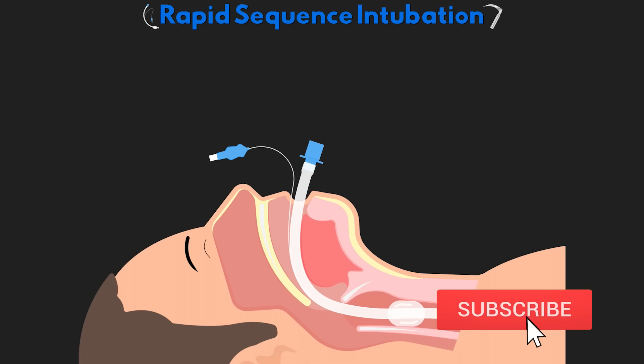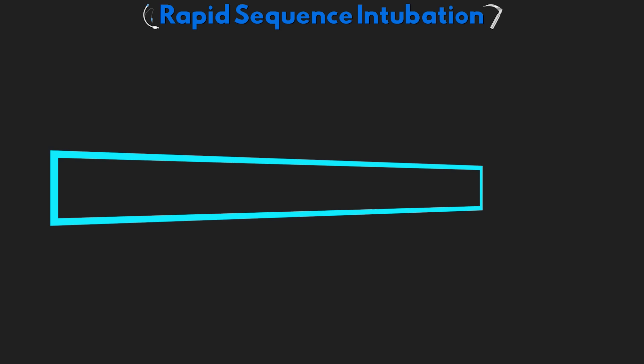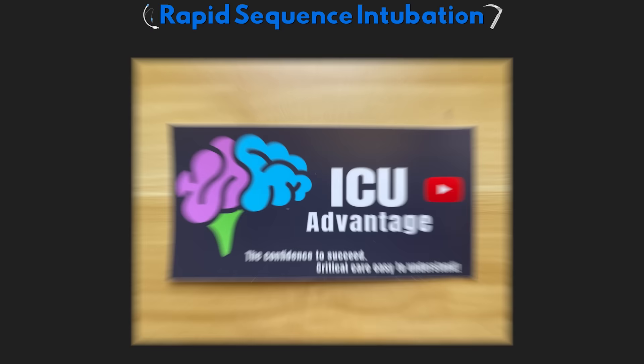When you subscribe, make sure you hit that bell icon and select all notifications so you never miss a new lesson. Notes for this lesson as well as all previous videos are available exclusively to YouTube and Patreon members. Also head over to ICUadvantage.com to take a quiz on this lesson and be entered into a weekly gift card giveaway.